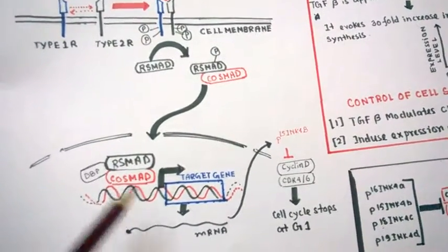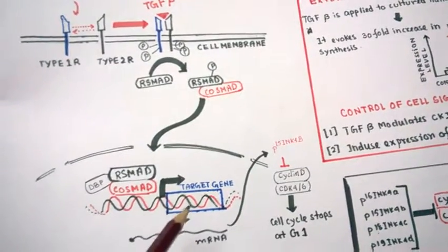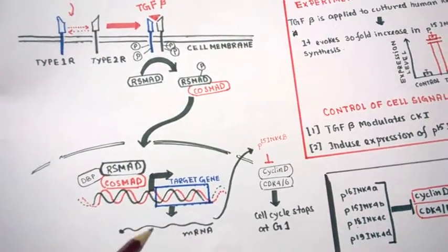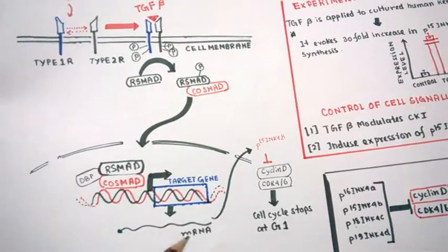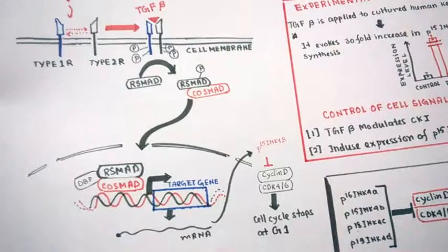It will transcribe the target gene, and this target gene mRNA will be produced, and thus the protein will be produced. So what are the target genes for this TGF beta signaling pathway?